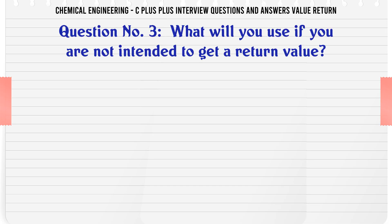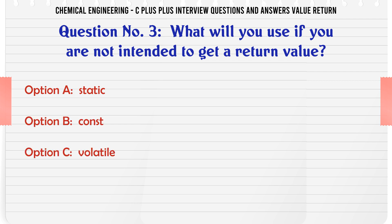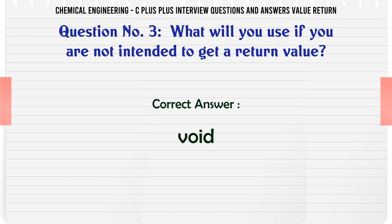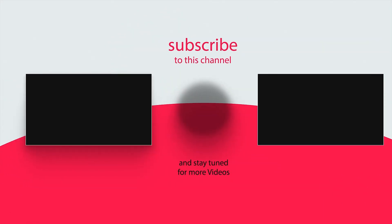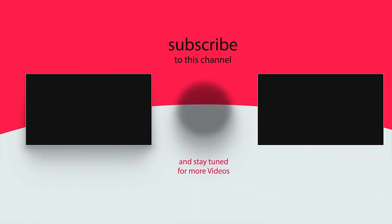What will you use if you are not intended to get a return value? a. Static. b. Const. c. Volatile. d. Void. The correct answer is: Void. Thank you.